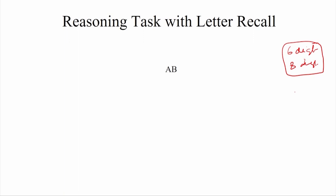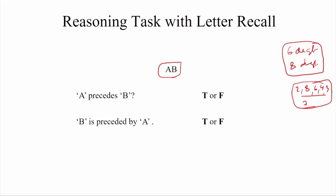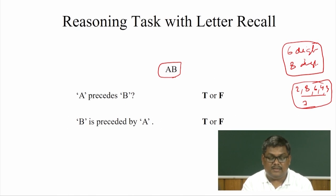People had to remember a sequence such as 8, 2, 8, 6, 4, 3, 7, and commit it to memory. Then they were given a logical decision-making task. For example, letters A and B were presented, and while holding the 6 or 8 digits in memory, they had to verify as quickly as possible whether A precedes B — answering true or false — or whether B is preceded by A. This was the sentence verification component of the task.